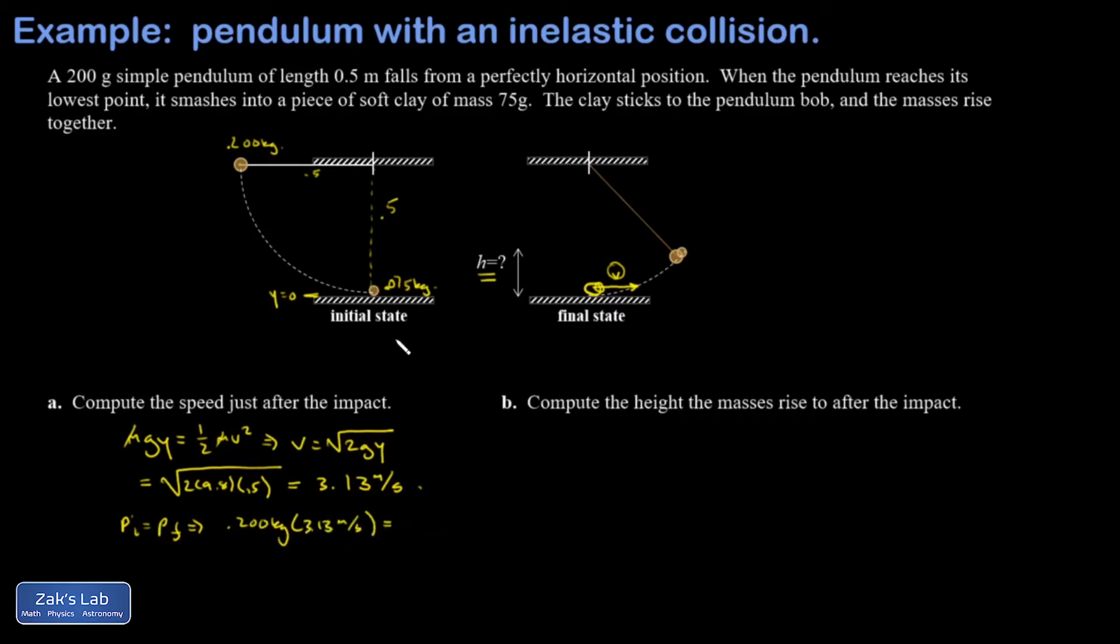I have the pendulum bob with the clay stuck on it. So that's going to be 0.275 kilograms, moving with some final speed, V. And I solve for V. And I get 2.28 meters per second. So there's our answer to A.